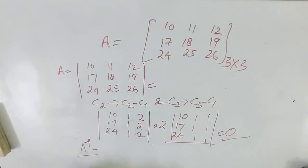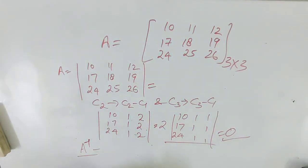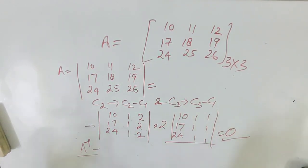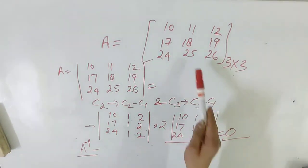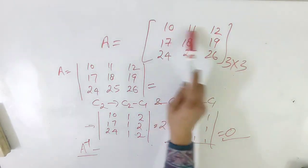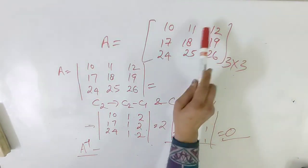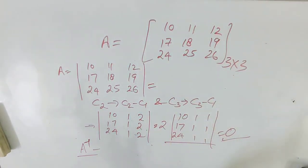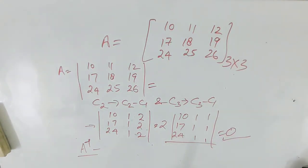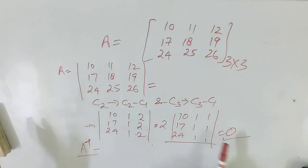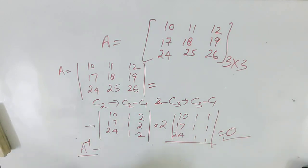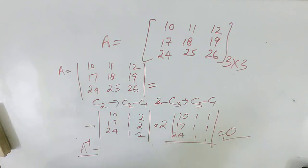Since the determinant is zero, we cannot find the inverse of any such calendar matrix. This is true for any 3×3 matrix taken from anywhere in the calendar. The reason is that the differences between consecutive numbers in the columns are always seven — the days of the week — making the columns linearly dependent. We can also form 2×2 or 4×4 matrices and perform addition on them. This beautifully demonstrates the application of determinants and matrices in something we use in daily life.